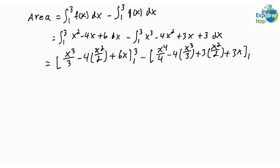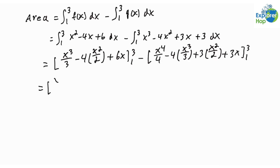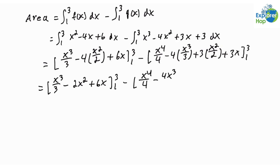Simplifying the expressions, this is equal to x³/3 - 2x² + 6x, evaluated from 1 to 3, minus x⁴/4 - 4x³/3 + 3x²/2 + 3x, evaluated from 1 to 3.